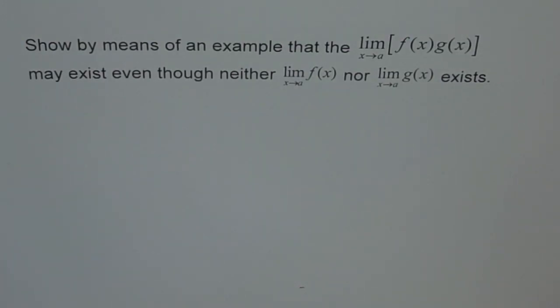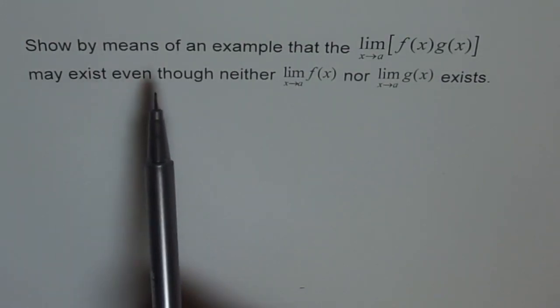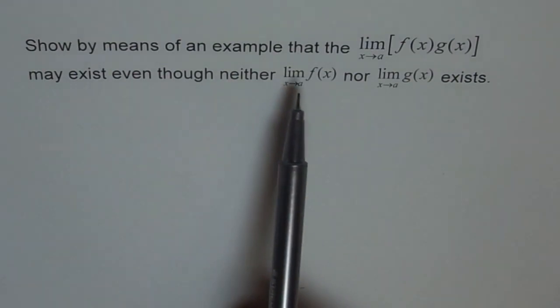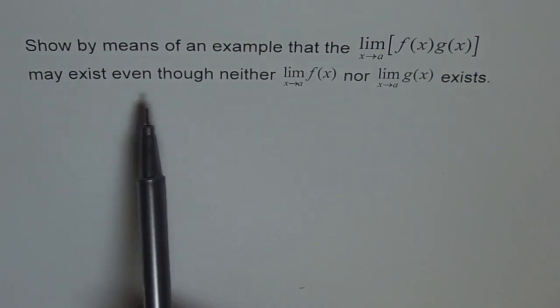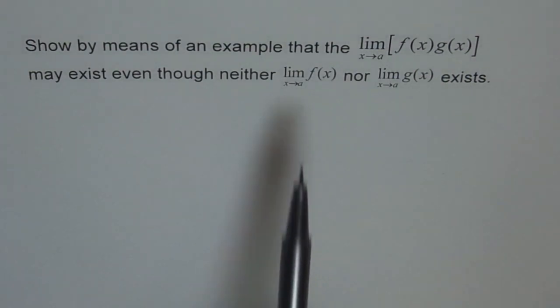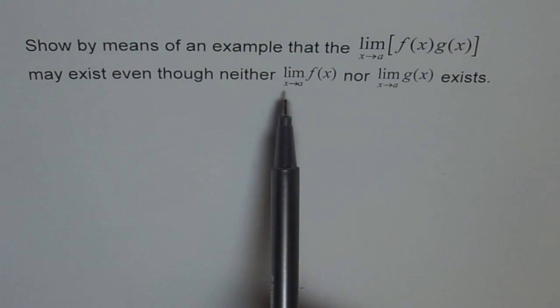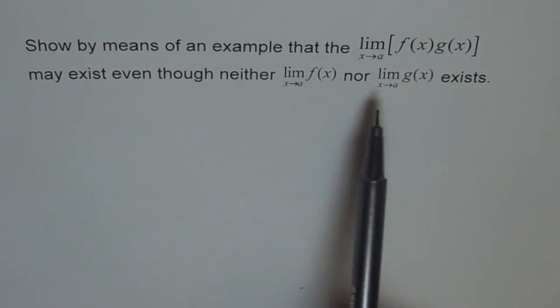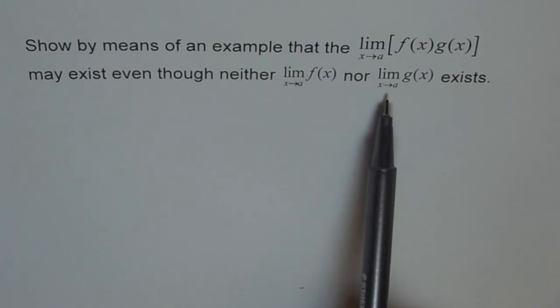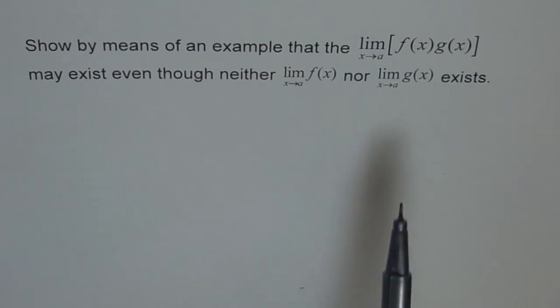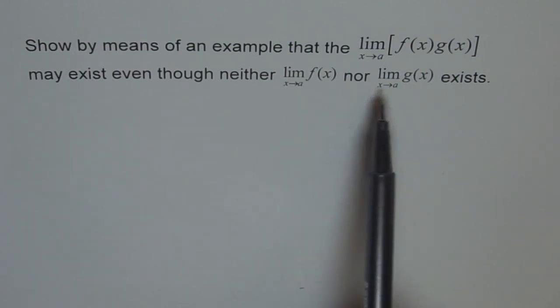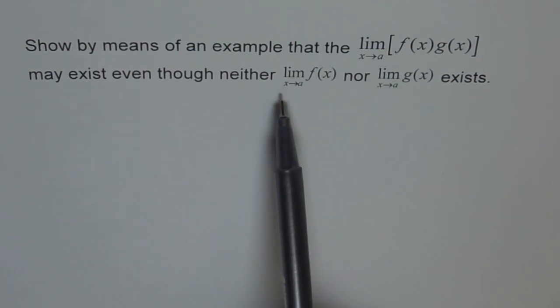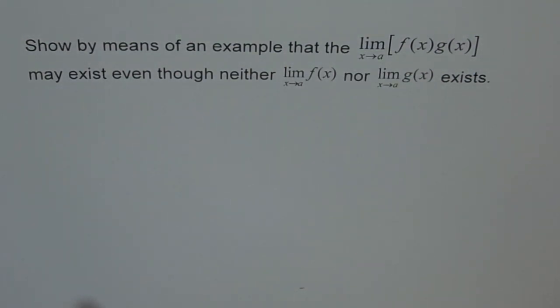Here is another interesting problem. Show by means of an example that the limit of f(x)g(x) may exist even though neither limit of f(x) nor limit of g(x) exists as x approaches a. What we're trying to say is that the limits of the functions themselves don't exist as x approaches a, but the product of those functions exists as x approaches a.